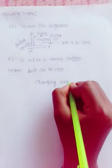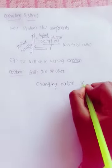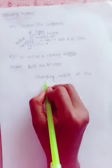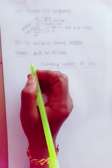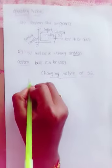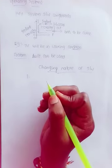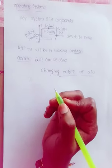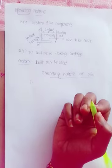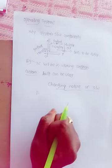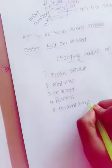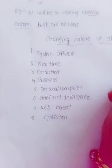Changing nature of software: first, system software; second, real-time software; third, embedded software; fourth, business software; fifth, personal computer software; sixth, artificial intelligence; seventh, web-based software; and eighth, application software.